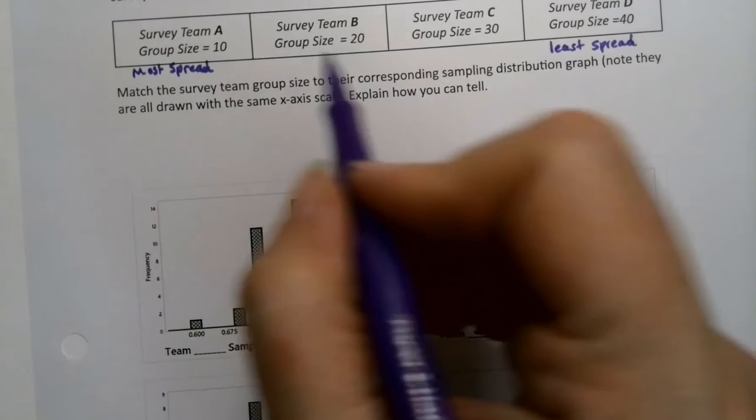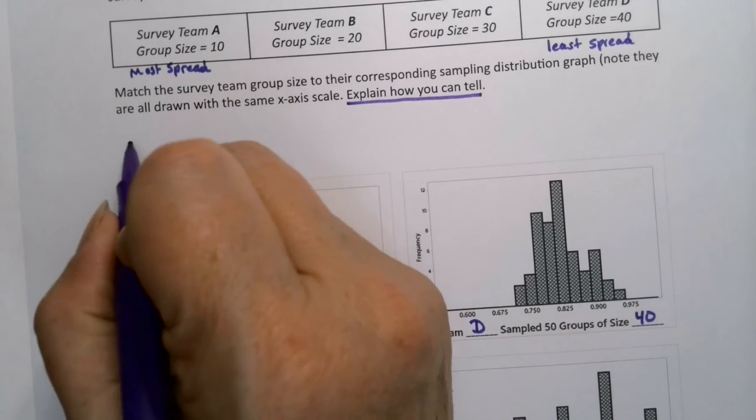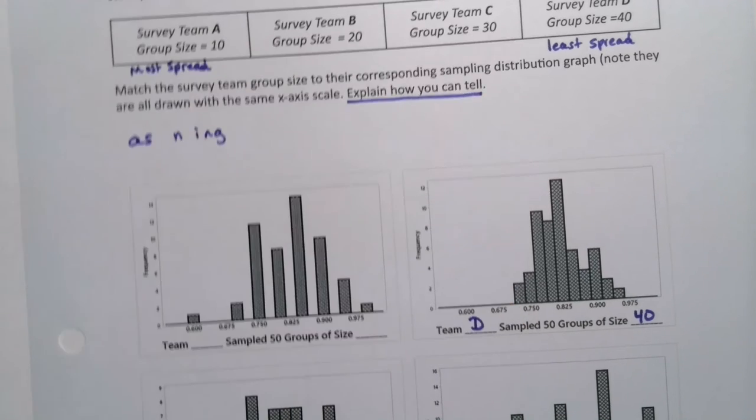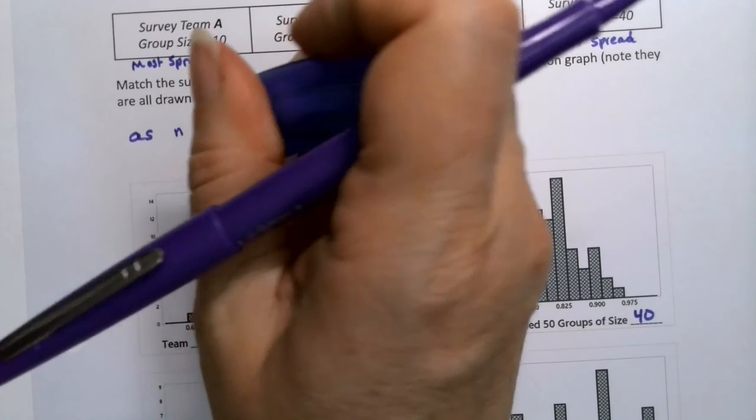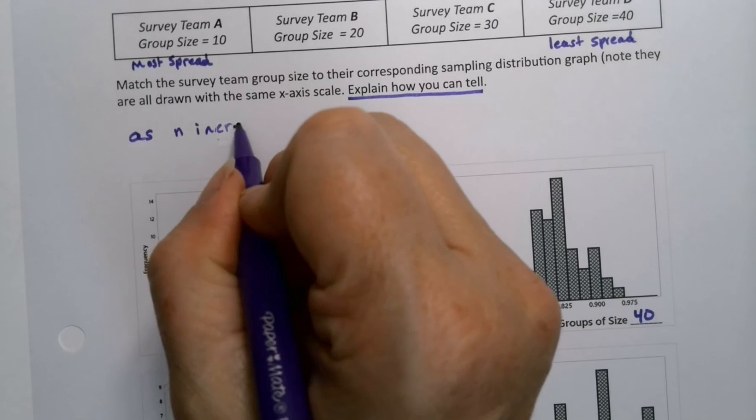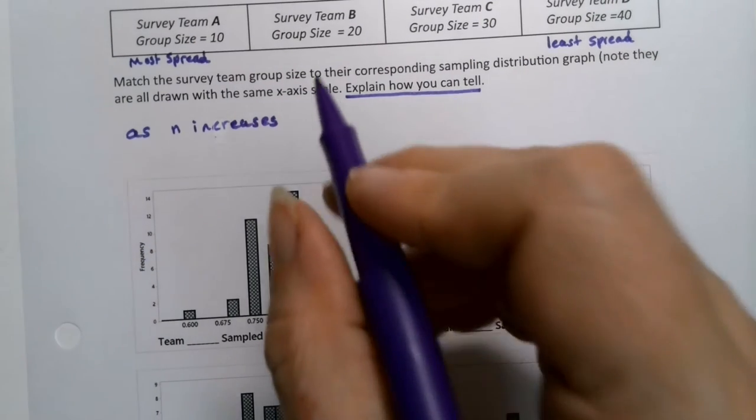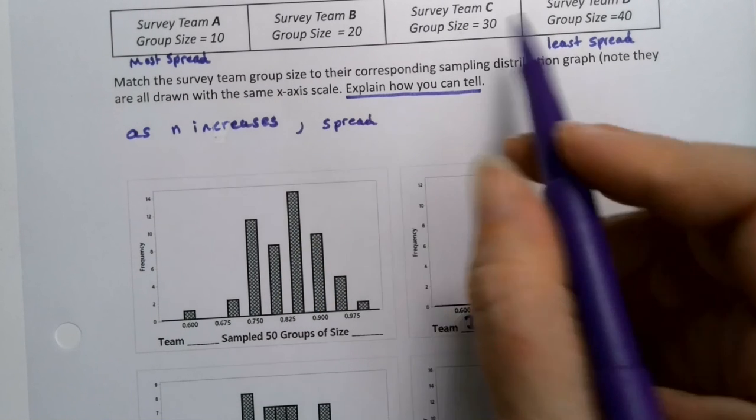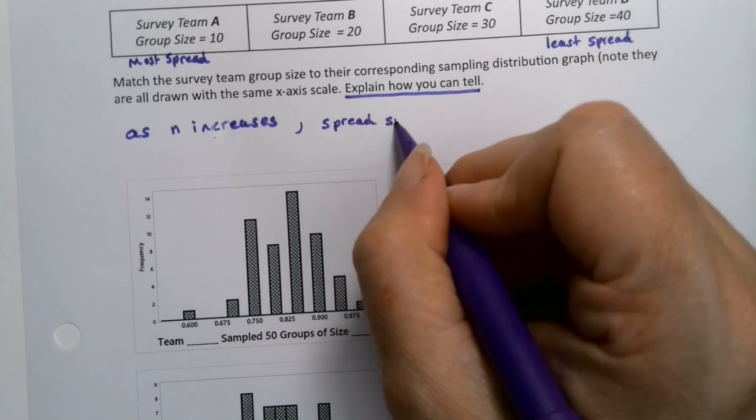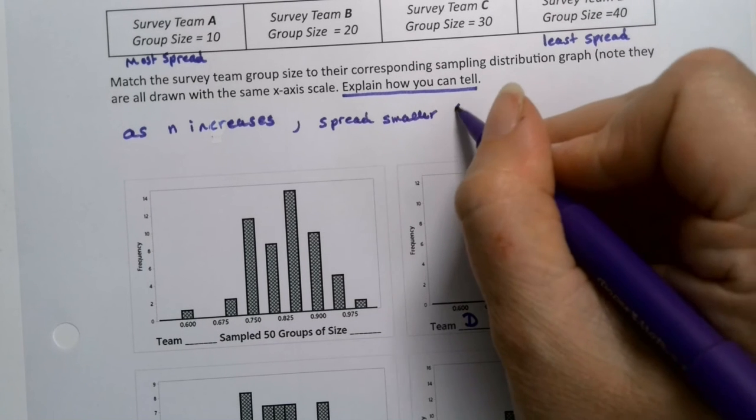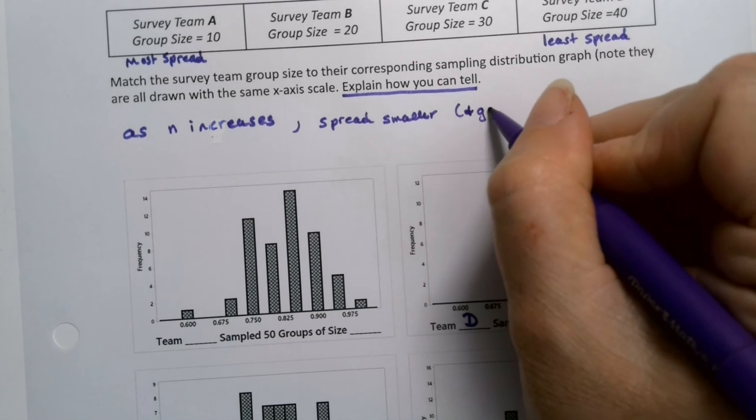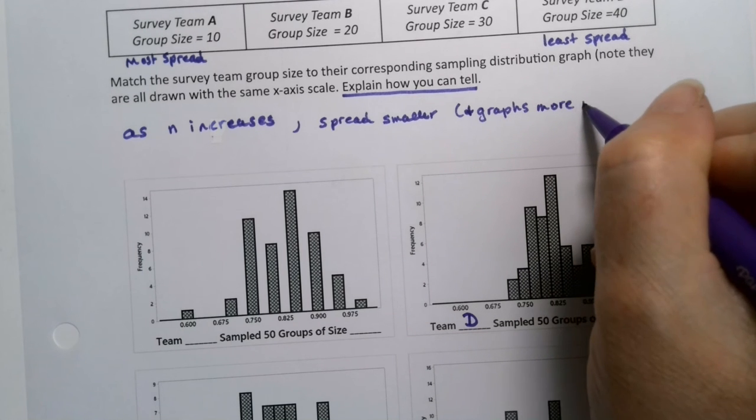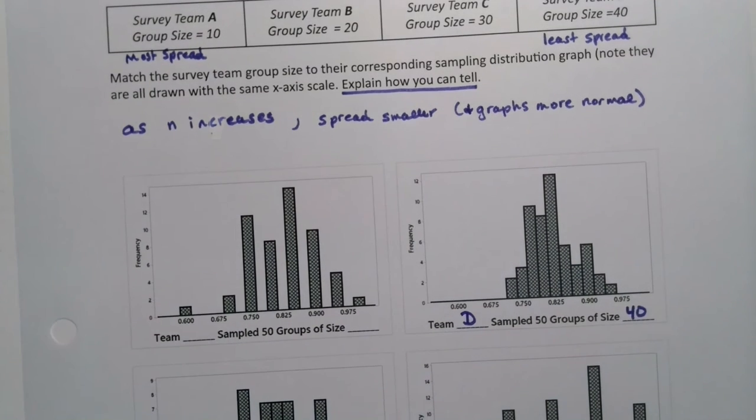Now again, how am I doing this? Explain how I can tell. Well, as N increases, gets larger, the spread is smaller and the graph is more normal. We learned that back in section 8.1 and it's still true.